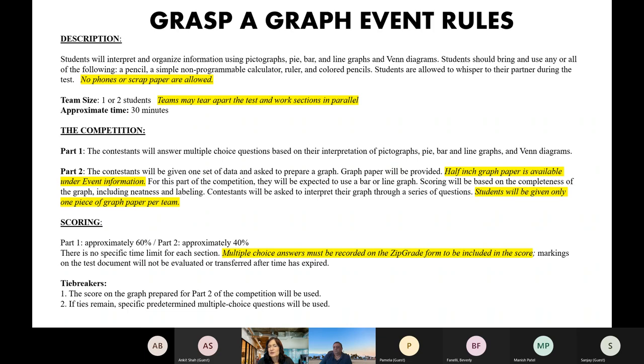For this part of the test, they'll only be asked to draw either a bar graph or a line graph, so we narrow it down even more for this section. Scoring is based on the completeness of the graph, including neatness and labeling, and later on in another slide, we'll go over that rubric in more detail. There will also be a few questions for this part of the graph, so the intent would be the student finishes the graph and then they have a few questions to answer based on their own visual. And again, students will be given one piece of graph paper as part of the test and that's it. So you need to teach them how to plan before they start drawing and what to do if they do make a mistake so that they don't panic because we won't give them another piece of graph paper.